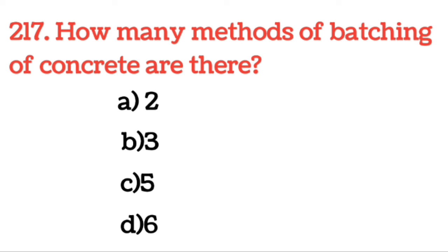Next question: How many methods of batching of concrete are there? For concrete batching there are two methods: one is weight batching and one is volume batching. Weight batching — one bag of cement is 50 kg. Volume batching is 35 liters.